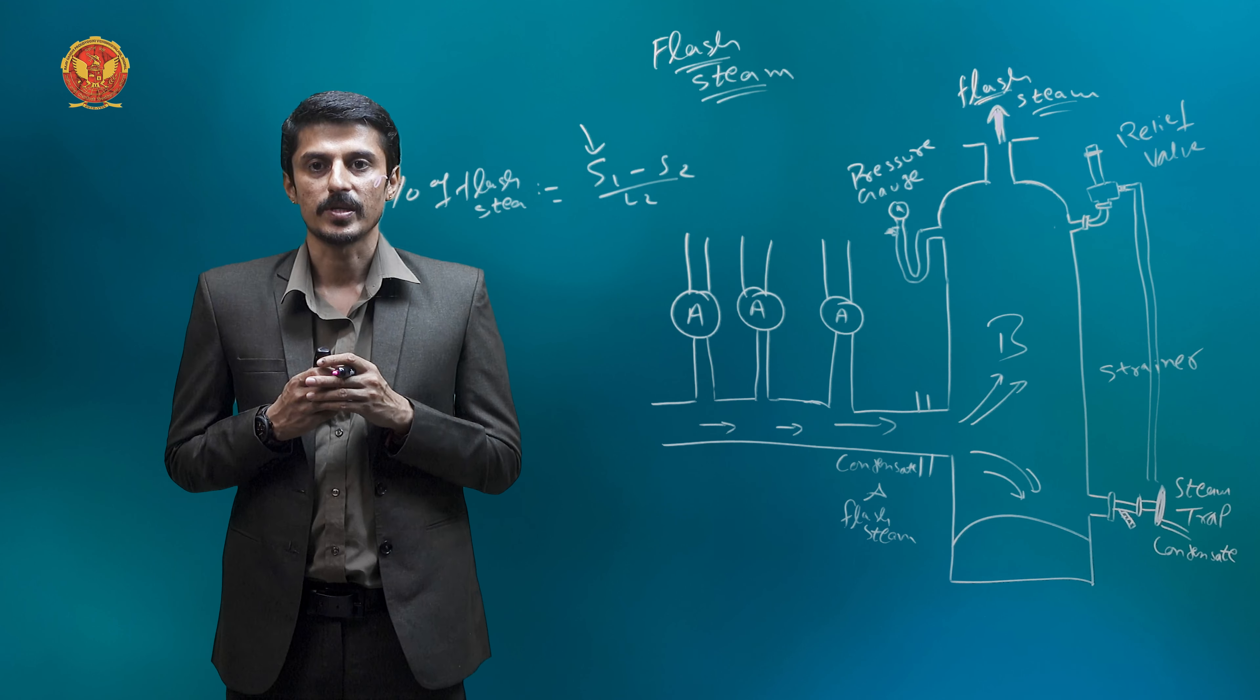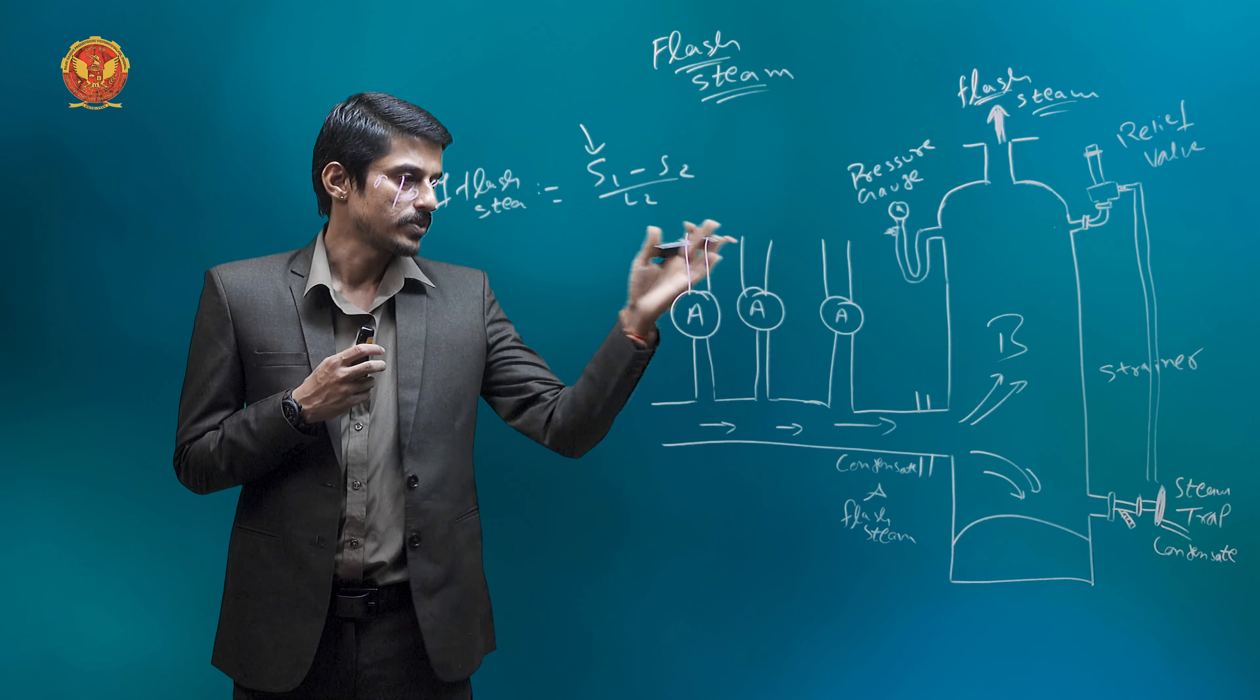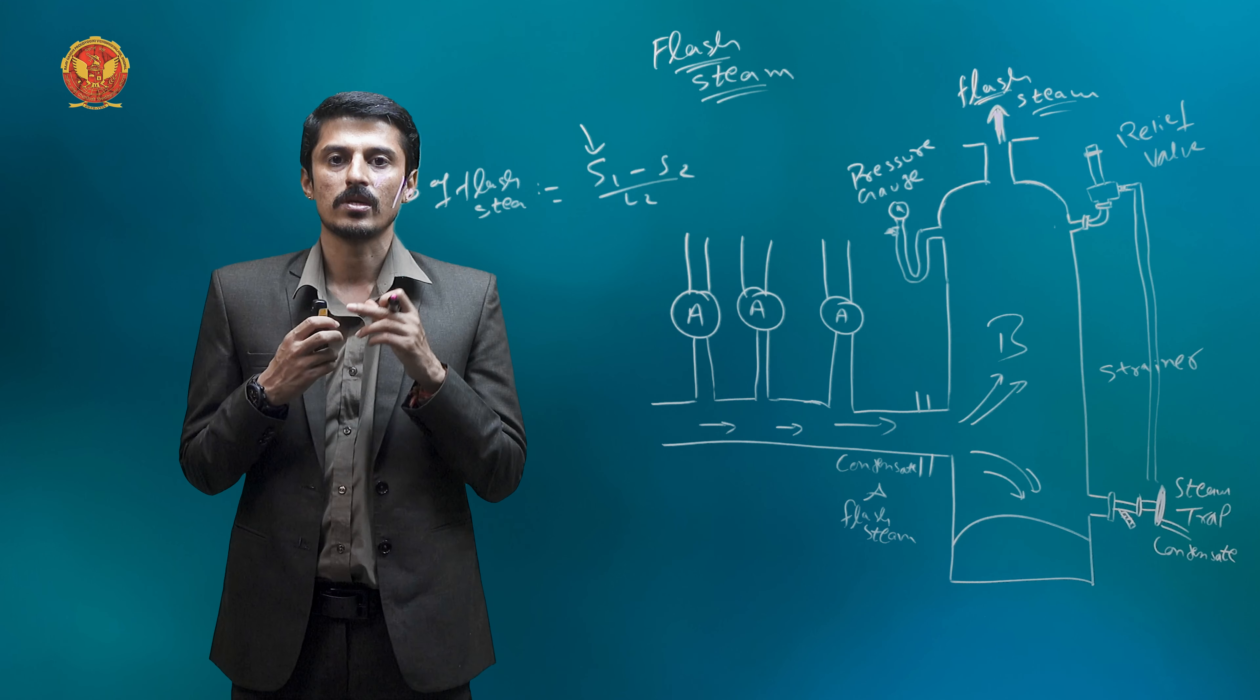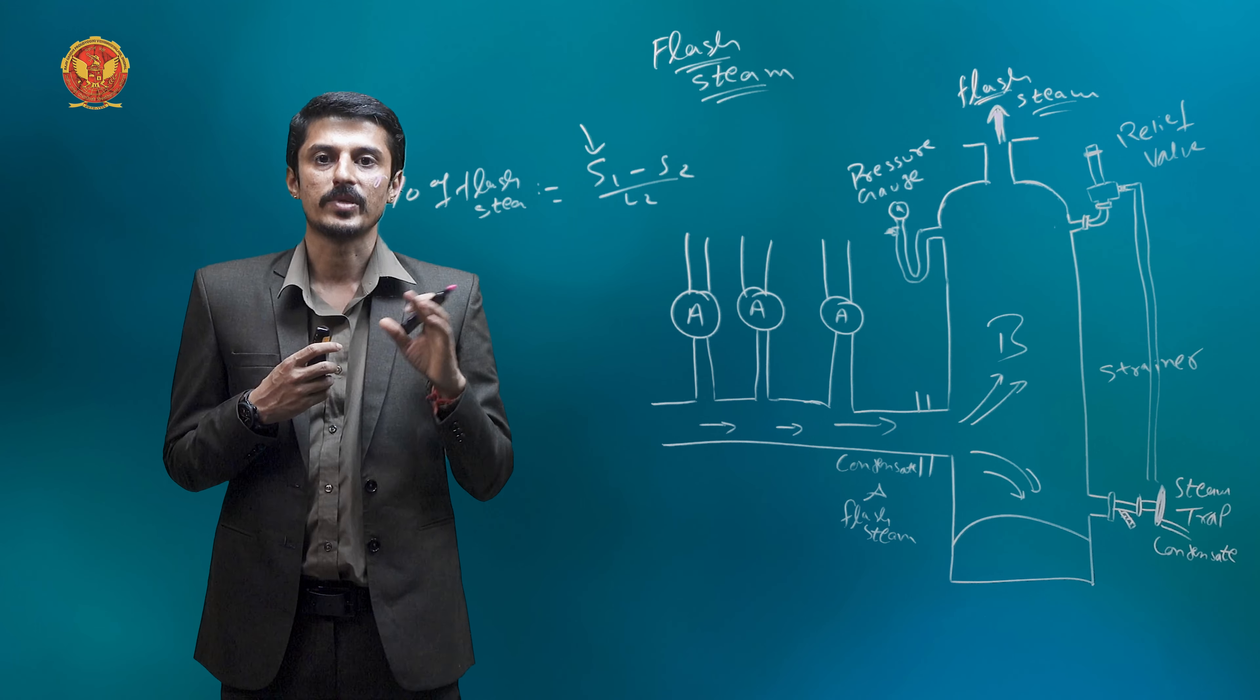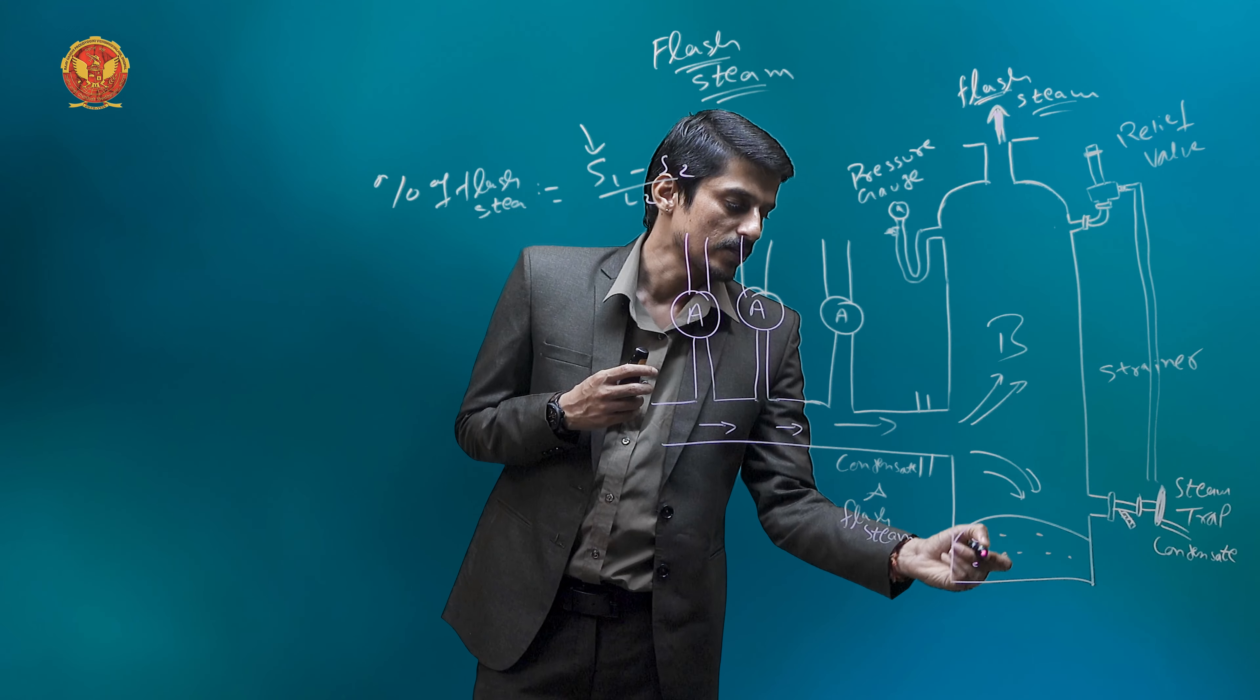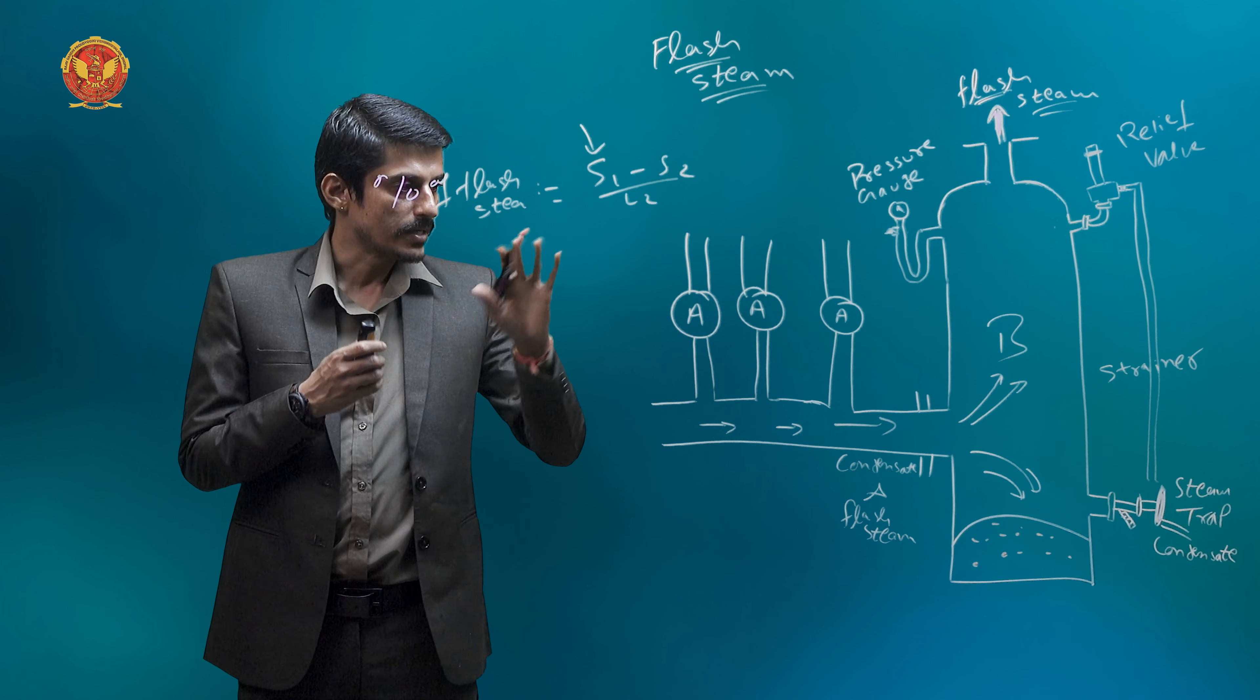Ultimately, the flash steam produced from the condensate can be separated into equipment called flash vessel. This is a vertical vessel. As shown in figure, this is a flash vessel. The diameter of vessel is such that the considerable drop in velocity allows the condensate to fall to the bottom of vessel from where it is drained out of the steam trap, preferably to a float trap. So when we have the condensate to flow, the maximum condensate to the bottom corner then we have the condensate to store. Then we have the steam trap to eject the system.